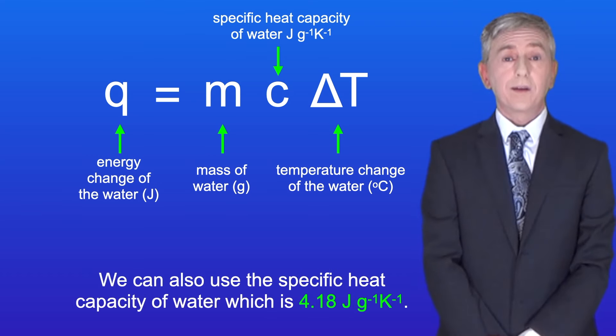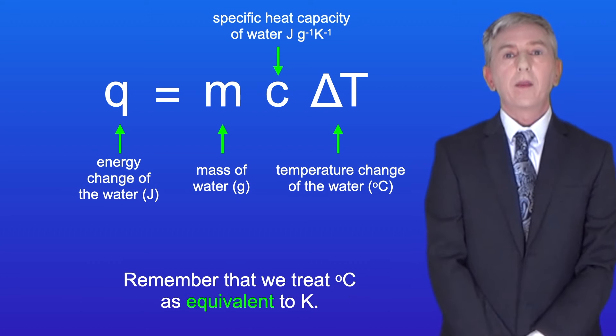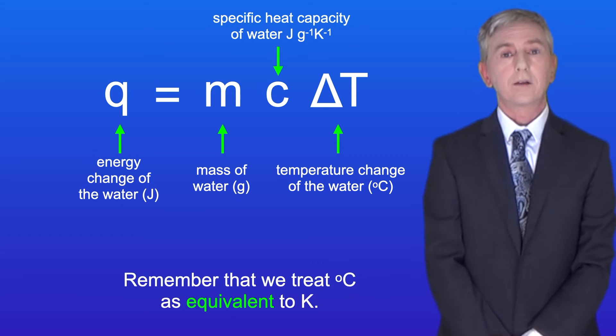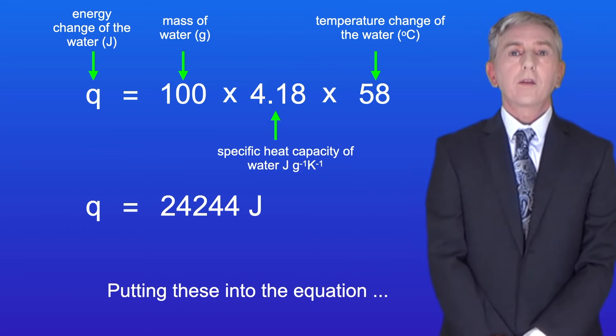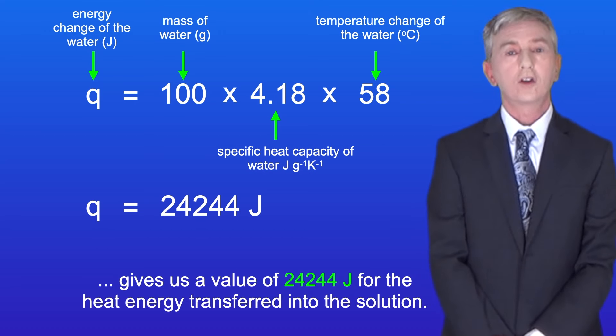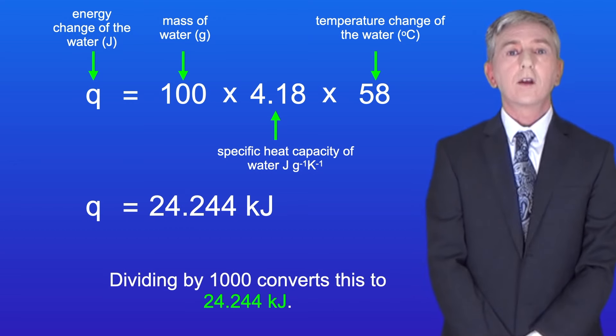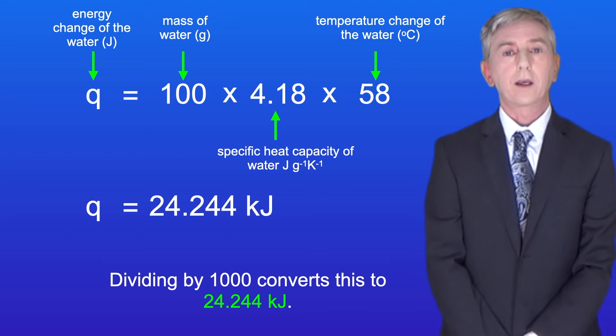We can also use the specific heat capacity of water, which is 4.18 joules per gram per kelvin. And remember that we treat degrees Celsius as equivalent to kelvin. Putting these into the equation gives us a value of 24,244 joules for the heat energy transferred into this solution. Dividing by 1000 converts this to 24.244 kilojoules.